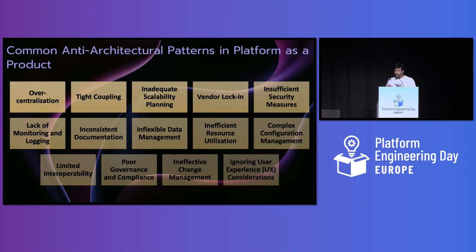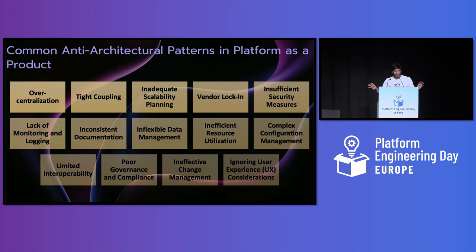Inadequate scalability planning — when you don't estimate the growth of the platform — is a pattern to move away from. Vendor lock-in. Insufficient security measures: when you're building the platform, you need to make sure what security things need to be baked in. Lack of monitoring and observability leads to siloed observabilities. When building a platform, you should not rely on multiple tools; concentrate on one centralized tool. Inconsistent documentation — we need to document the APIs, configuration, and everything we're building in the platform.